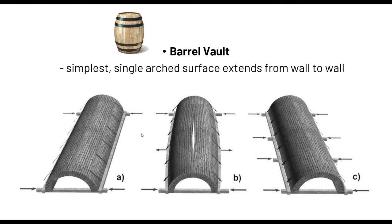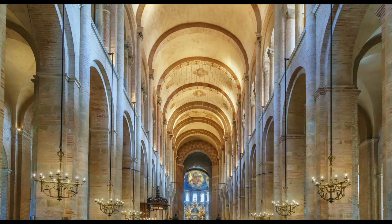The barrel vault is technically just an arch that was extruded or pulled lengthwise. When you look at the illustration it may not seem impressive, but when you see it in real-life scale it is remarkable. This is a barrel vault — from the usual arches of the Romans, it evolved into a spread-out arch which became the barrel vault. That is vaulting system number one.